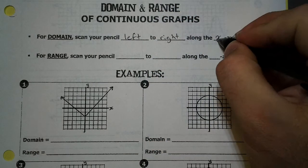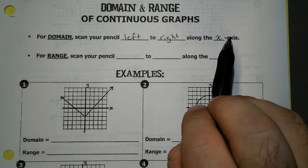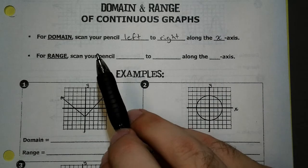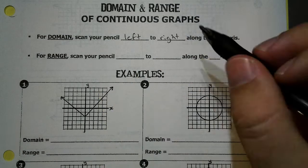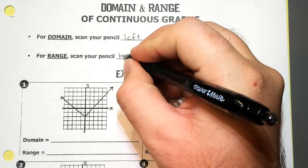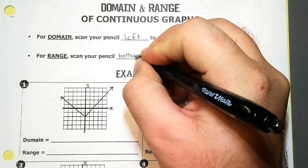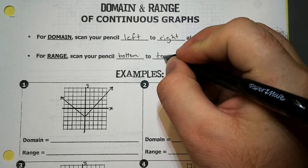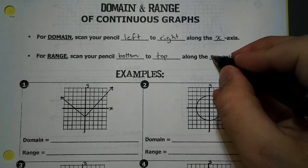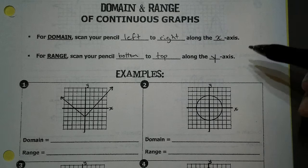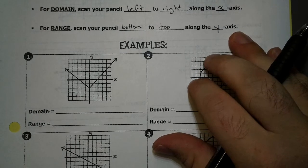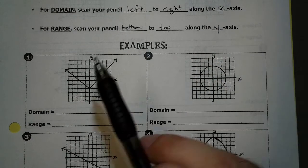Along the x-axis. Remember, domain deals with x's. For range, you're going to scan your pencil from the bottom to the top along the y-axis because range goes up and down. Now let's look at this first one, scanning from left to right.